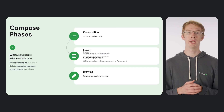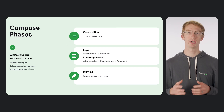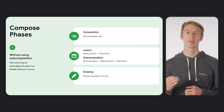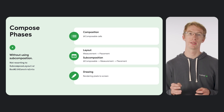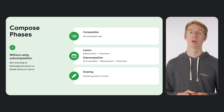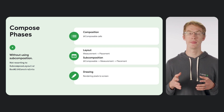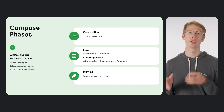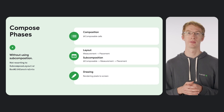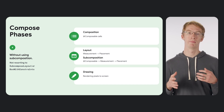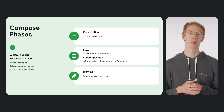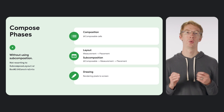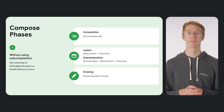Being able to avoid subcomposition is the final desirable quality. Subcomposition is an escape hatch — by delaying some composition, and then that measurement and placement, to the layout phase. This works, but subcomposition can be problematic for performance, which we'll talk a little bit more about later.